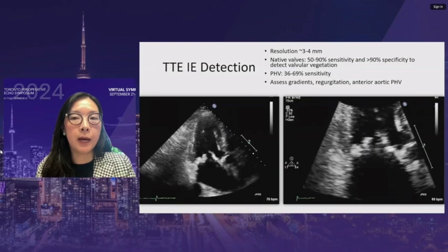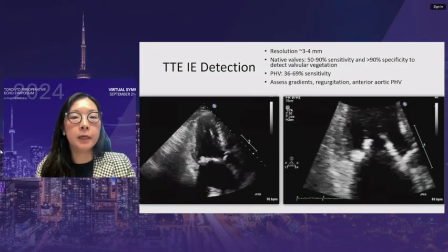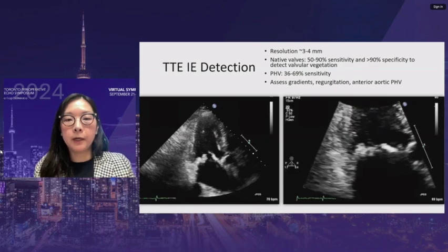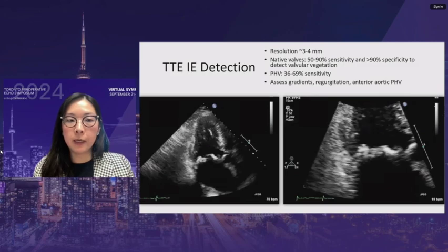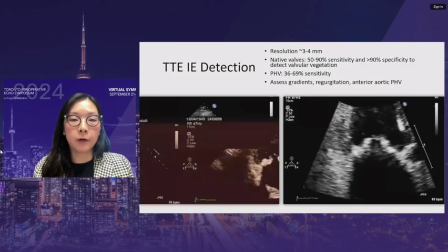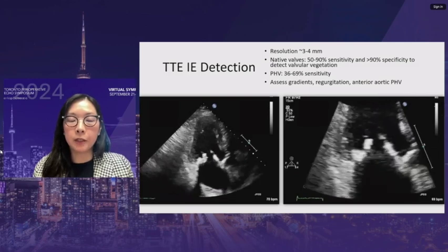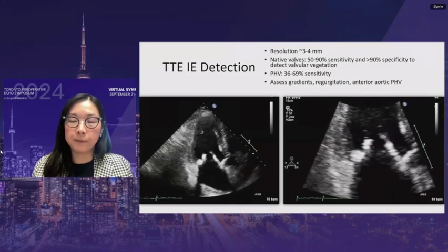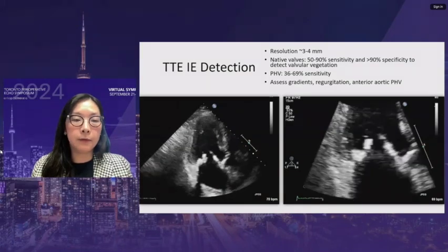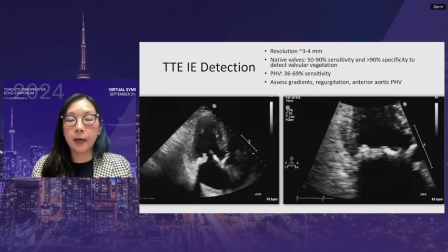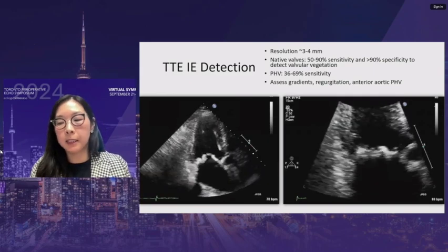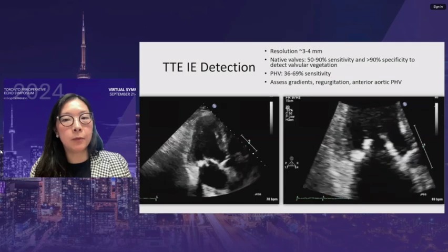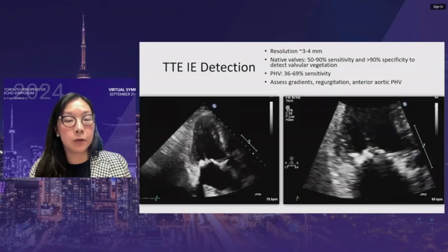The specificity of TTE is quite good at more than 90%. However, for prosthetic heart valves, sensitivity decreases to about 36 to 69%. TTE cannot definitively exclude vegetation or paravalvular complications such as abscesses. But it's important because it can make the diagnosis, direct early treatment, and identify very high-risk patients. It also assesses valve gradients and regurgitation, ventricular function, chamber size, and pulmonary pressures. For prosthetic aortic valves, TTE is valuable for assessing the anterior aortic area that may be shadowed on TEE.